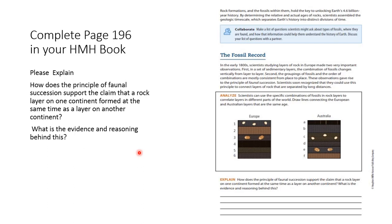In this video, we will explain how the principle of faunal succession supports the claim that a rock layer on one continent formed at the same time as a layer formed on another continent. You will be filling out this explanation at the bottom of page 196 in your HMH book.